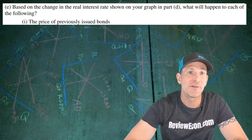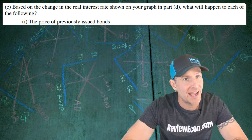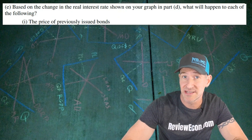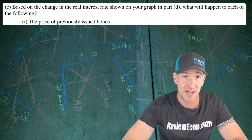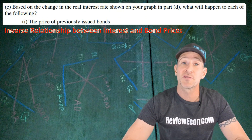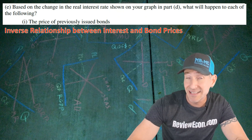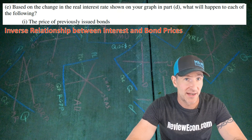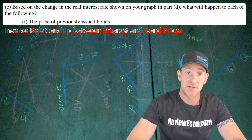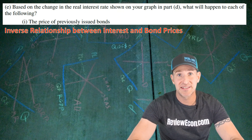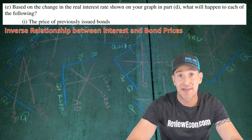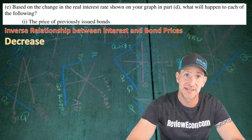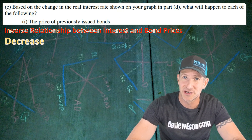For part E(i), we have to say what will happen to the price of bonds as a result of the increase in the interest rate. We have to remember that there's an inverse relationship between interest rates and bond prices. Since we just saw an increase in the interest rate, that means we are going to have a decrease in bond prices. Simply say 'decrease' and you get your next point.